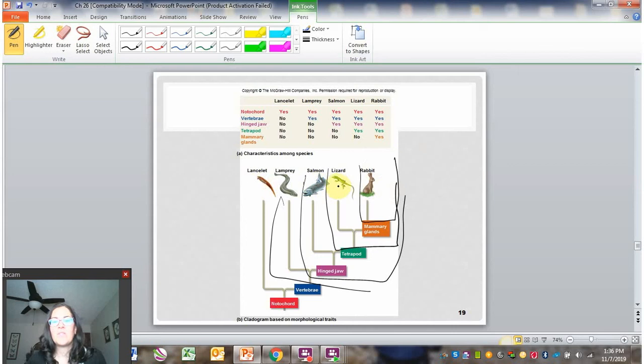The lancelet, the lamprey, the salmon, and the lizard are all the out-group. So again, progressively smaller in-groups, progressively larger out-groups. You could also think of it that way based on trait differences.